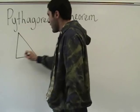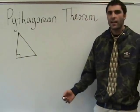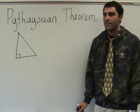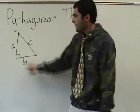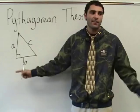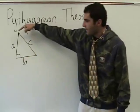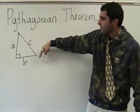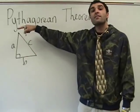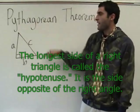It involves right triangles. A right triangle is a triangle with a right angle in it. If this leg is known as A — it could be any value — this leg is known as B — it could be any value — and this is C. Does anyone know the other word for this? What's it called? The hypotenuse. That's right. This is the hypotenuse.